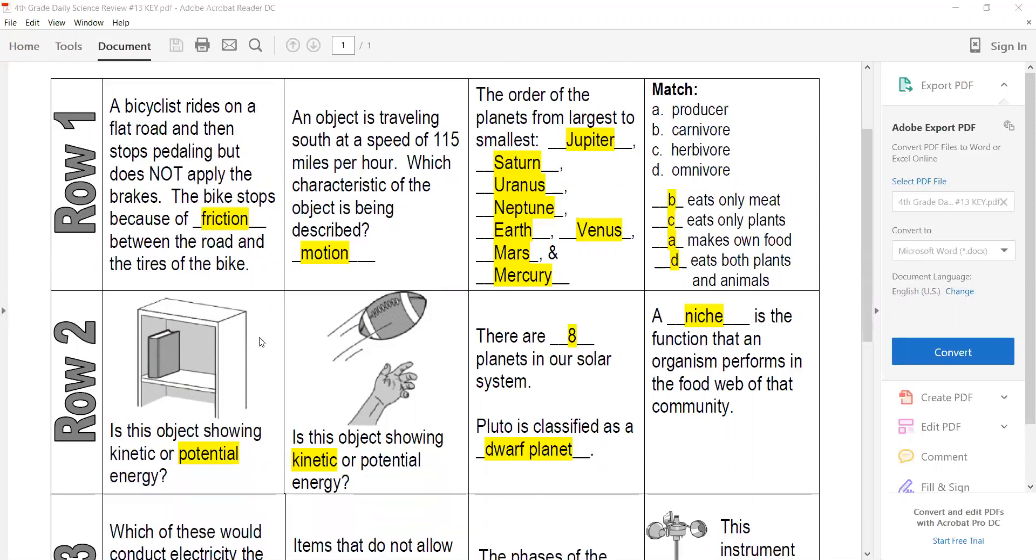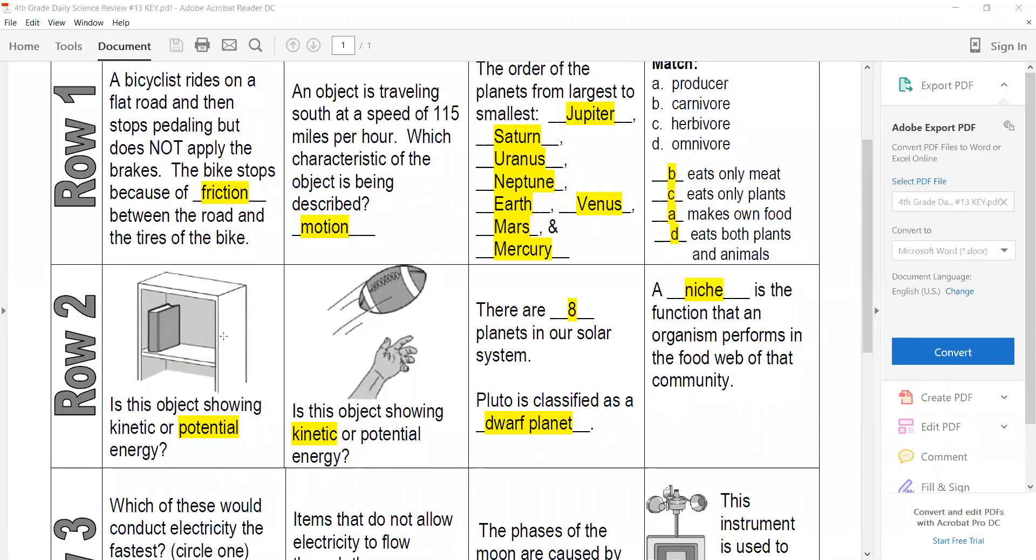This book just sitting here is showing potential energy. If it's not moving, it has the potential to move. An object in motion, like this football in the next picture, has kinetic energy because it's actually moving.